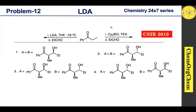This problem is from CACR 2019. According to this problem, an α-substituted ketone reacts with LDA followed by propanaldehyde to produce compound A. Similarly, the same ketone reacts with chlorodicyclohexyl borane in the presence of triethylamine, and that intermediate then reacts with propanaldehyde to produce compound B. There are four options — this problem is based on cross aldol reaction.